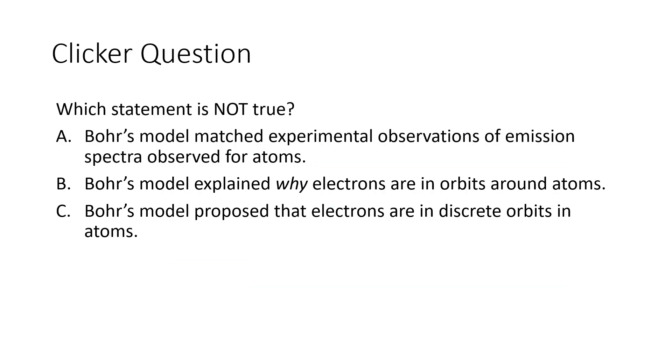And so let's take a look at these three statements about the Bohr model. Two of them are correct. One of them is not correct. The first one says that Bohr's model matched experimental observations of emission spectra observed for atoms. The second one says that Bohr's model explained why electrons are in orbits around atoms. And the third statement is that Bohr's model proposed that electrons are in discrete orbits in atoms.